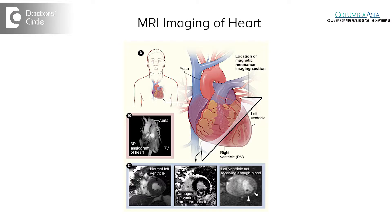Ischemic heart disease can also be diagnosed based on echocardiogram showing regional wall motion abnormalities on a chronic basis, or magnetic resonance imaging MRI of the heart, which may show infarcted heart muscle. A confirmatory diagnosis of ischemic heart disease is usually by an angiogram.